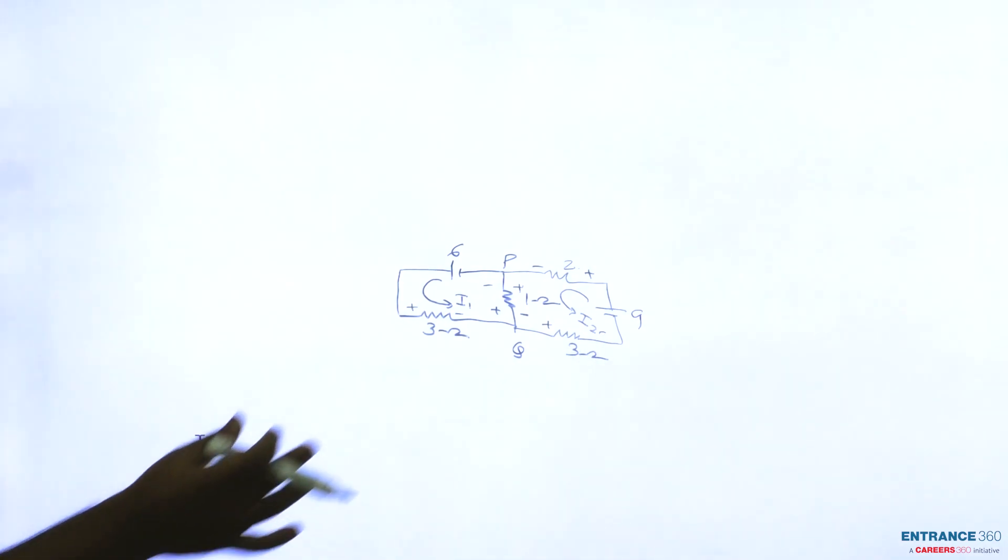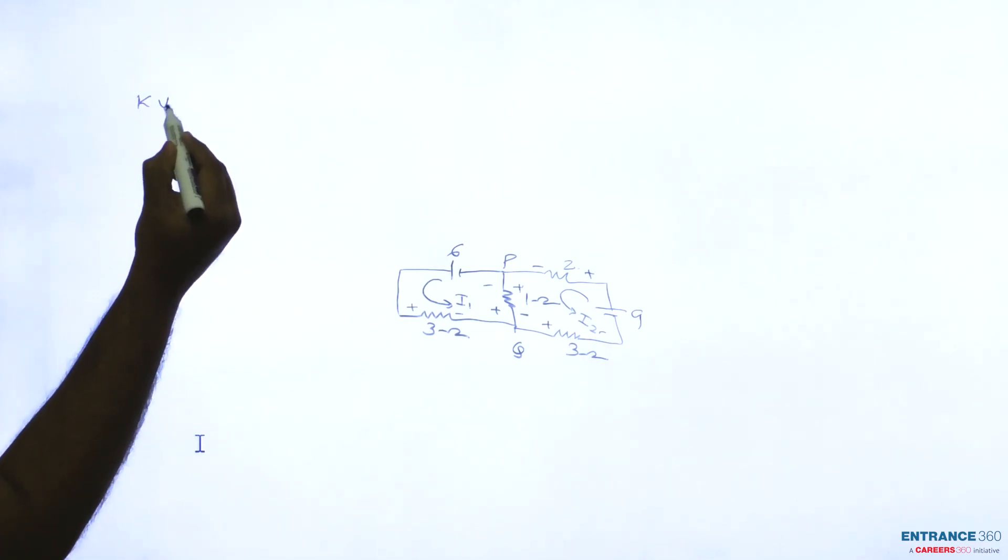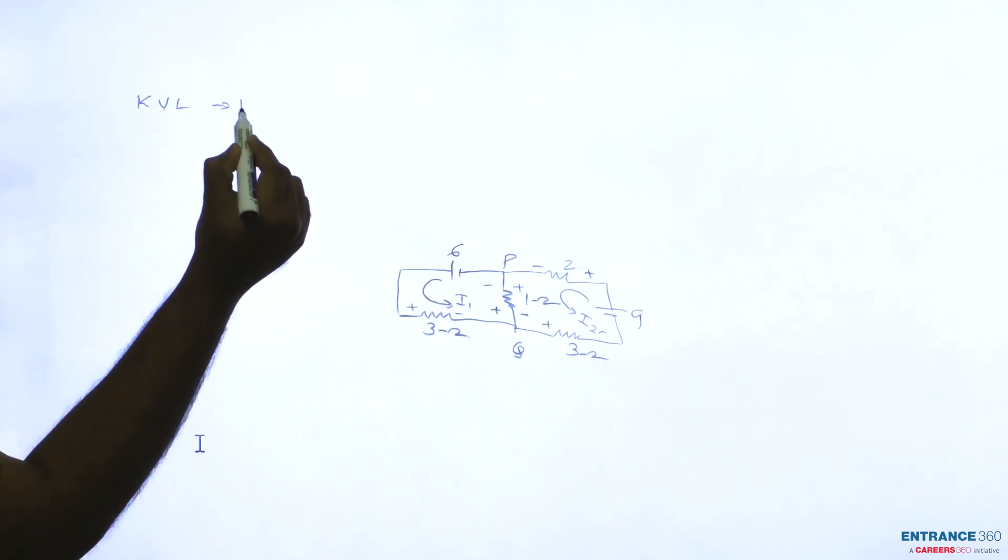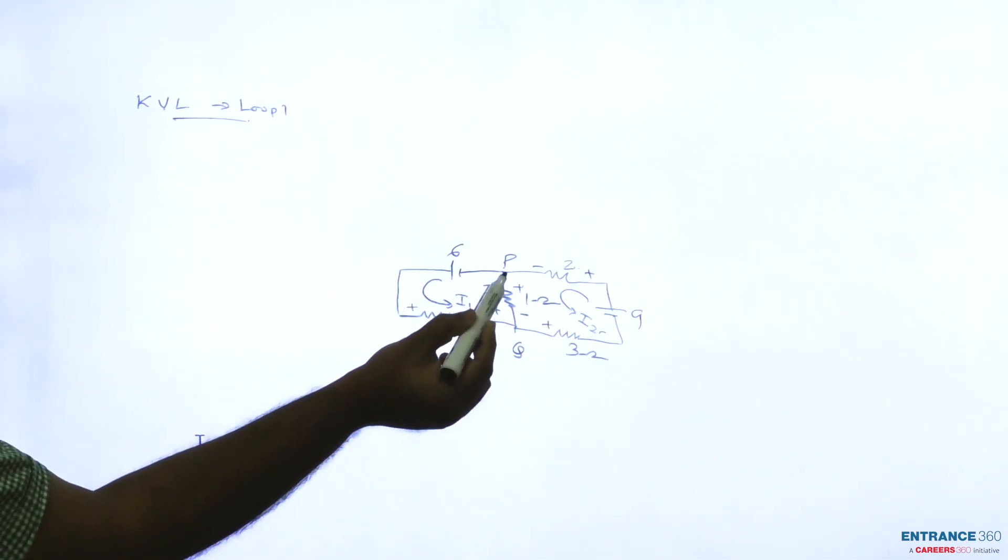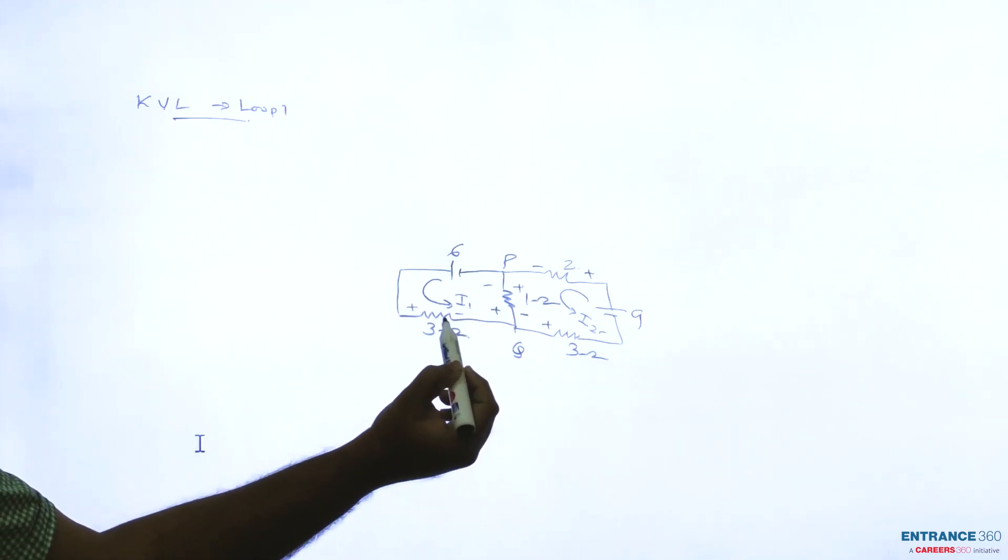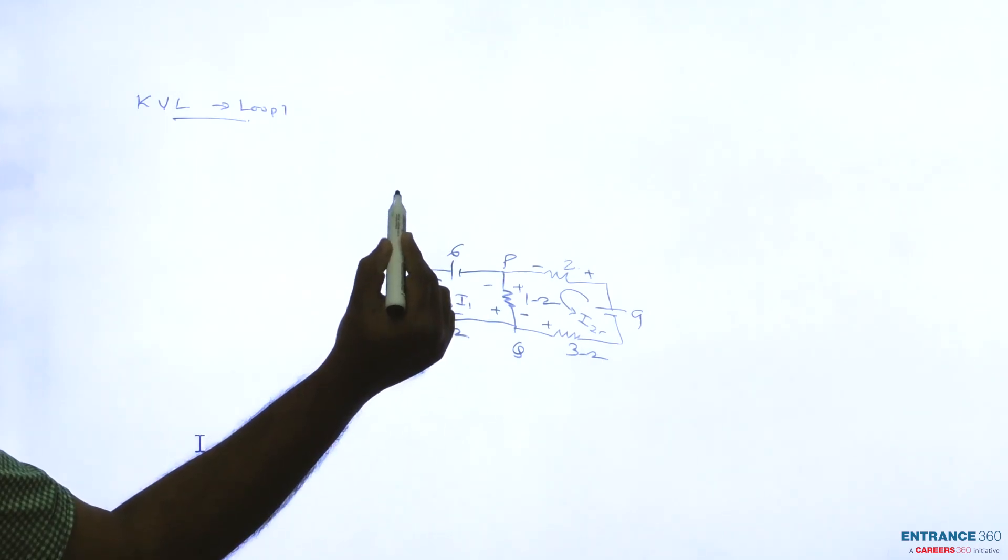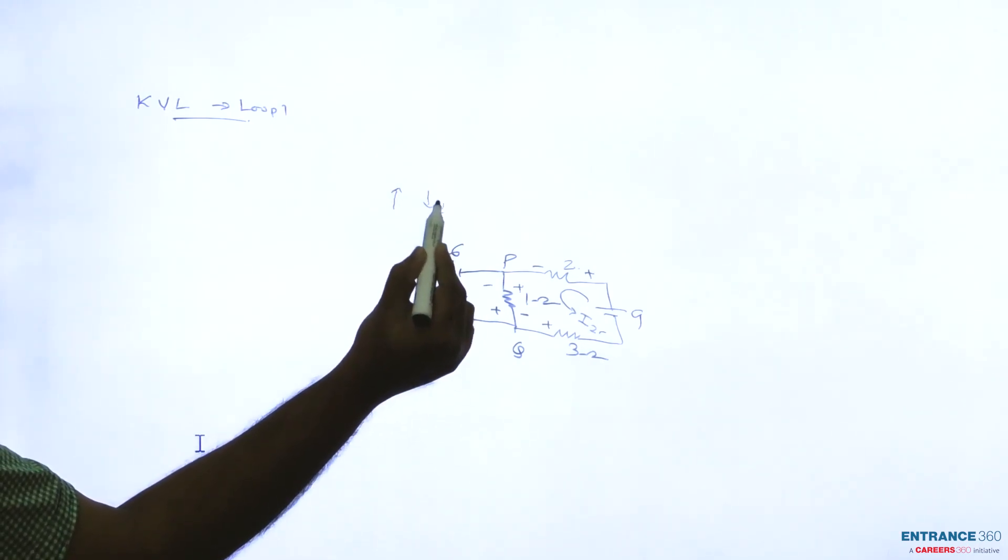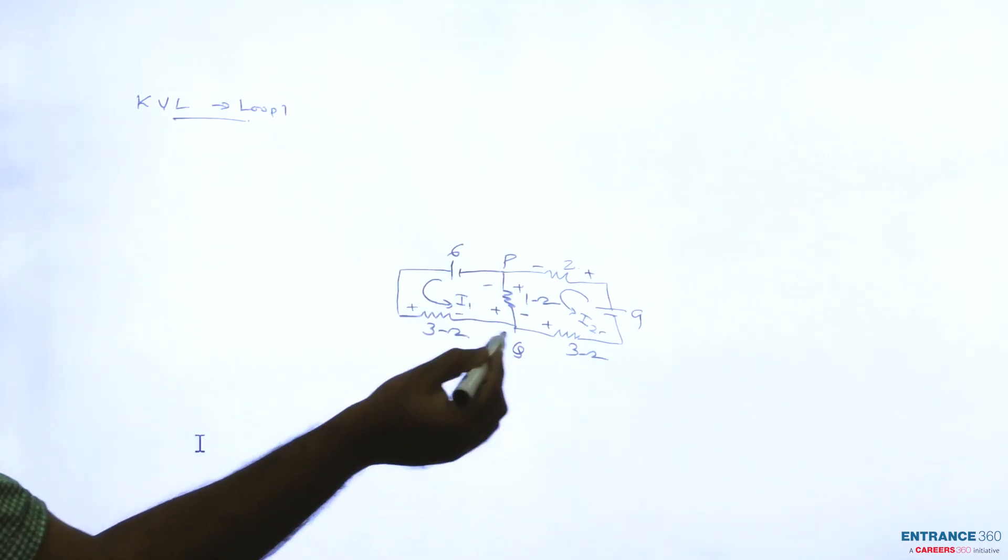Now if we consider the first loop, KVL in loop one, the current flowing through PQ will be, this one ohm resistance will be I1. I1 is like this and I2 is like this, so I1 minus I2 will be flowing through this one ohm.